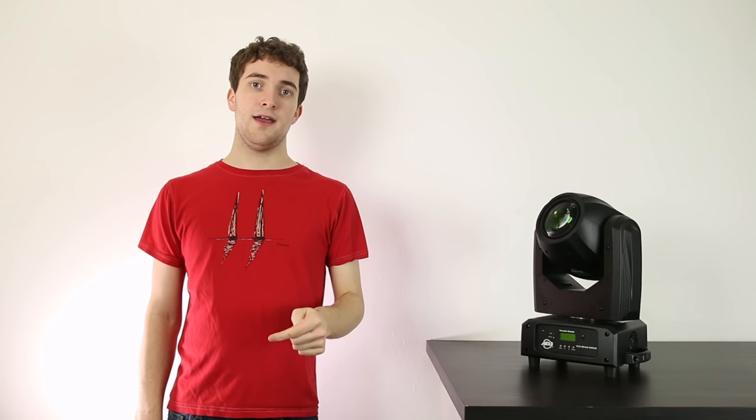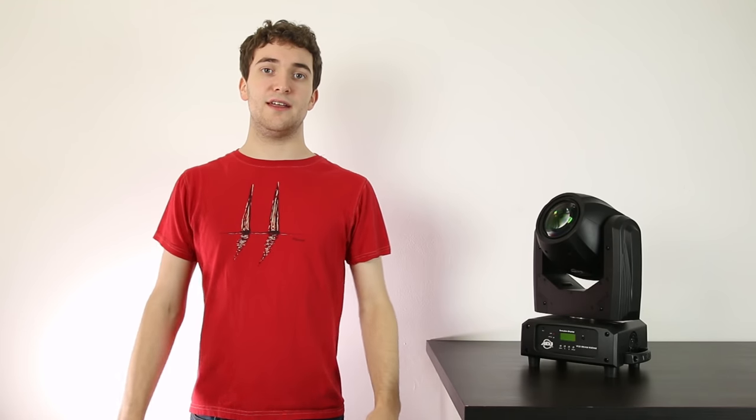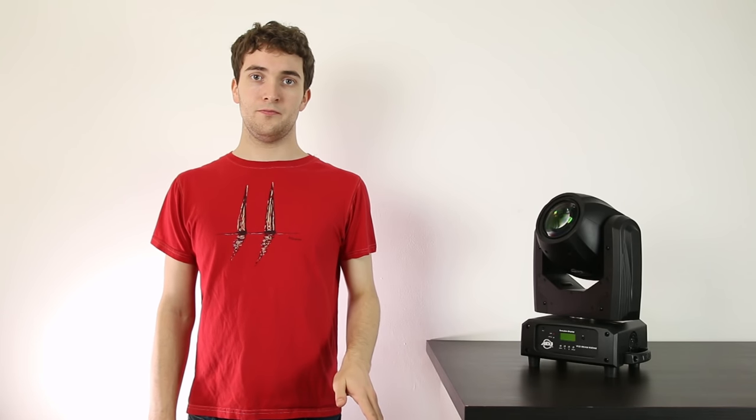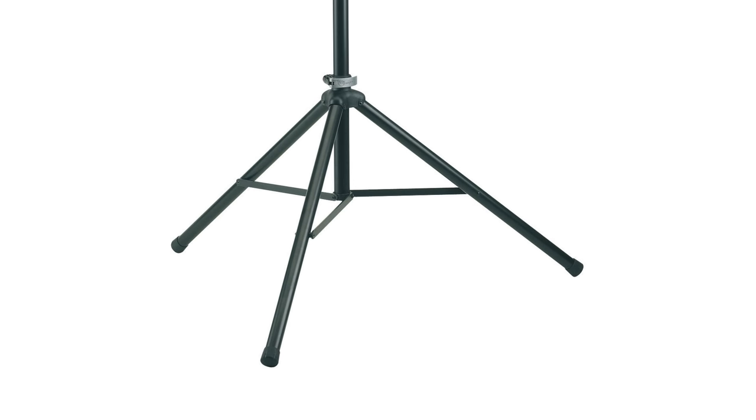Tip number five is to do with how to set up your tripods correctly. I've seen a lot of DJs out there who are doing this wrong and not fully extending the legs of their tripods. To set up a tripod correctly, extend the legs until the support braces that hold the legs to the center column are completely horizontal.